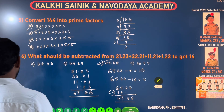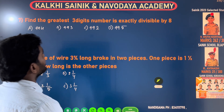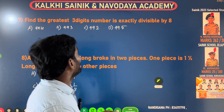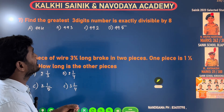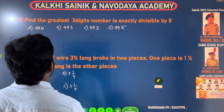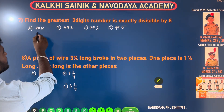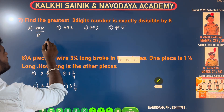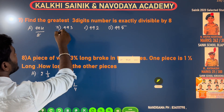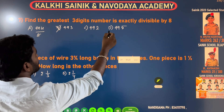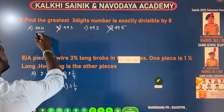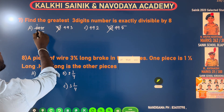Find the greatest three-digit number exactly divisible by 8. Check the 8 times table: the last digit pattern helps identify divisibility. The greatest three-digit number divisible by 8 can be found by checking 8-table values from 999 downward.